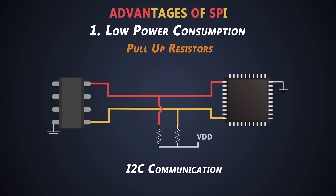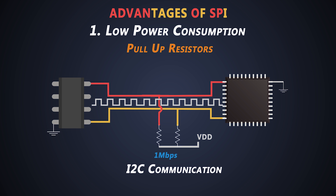If a device needs to talk, it will pull the SDA line or clock line low and high continuously to send data. The value of these pull-up resistors is in kilo-ohms. But as we increase the data transmission speed, this value decreases. For example, we need 2 kilo-ohm resistance for 400 kbps speed, and this resistance value decreases further for higher speeds. So depending on this pull-up resistor value, the circuit draws very much current, which eventually results in power loss.